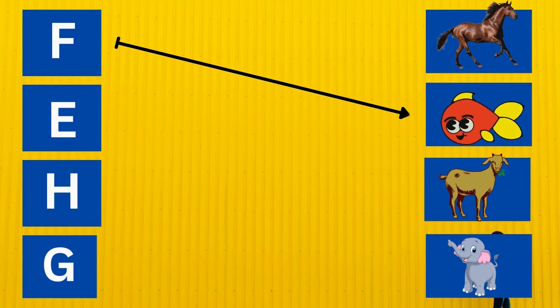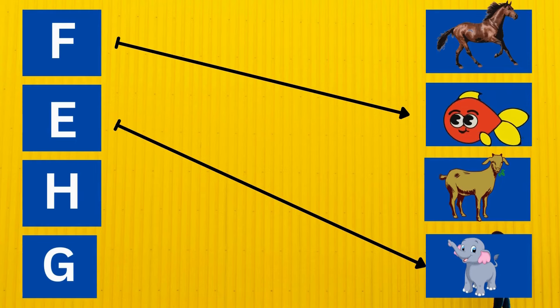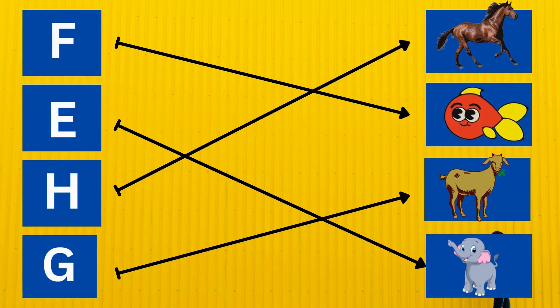F is for fish. E is for elephant. H is for horse. G is for goat.